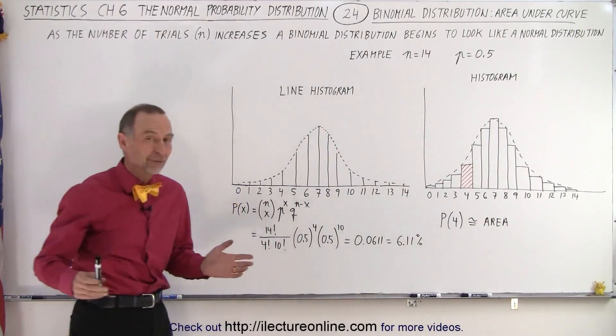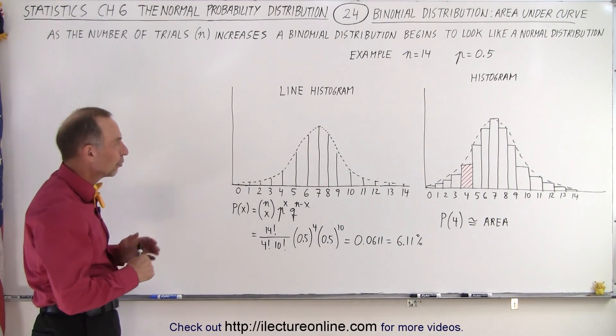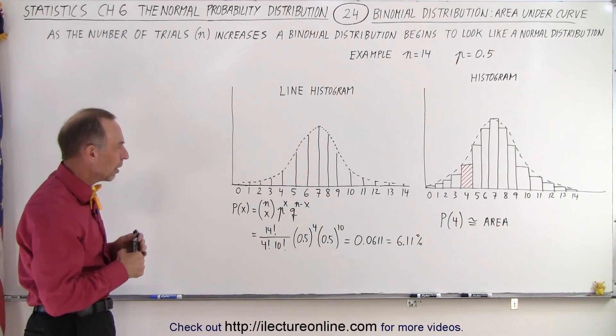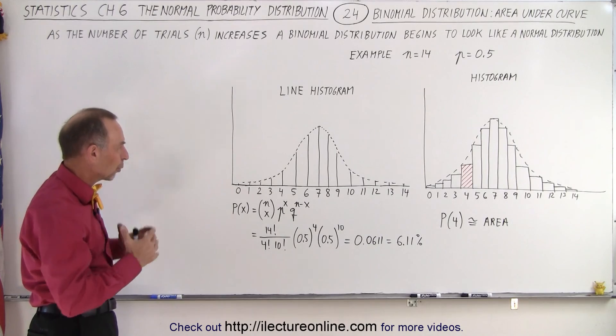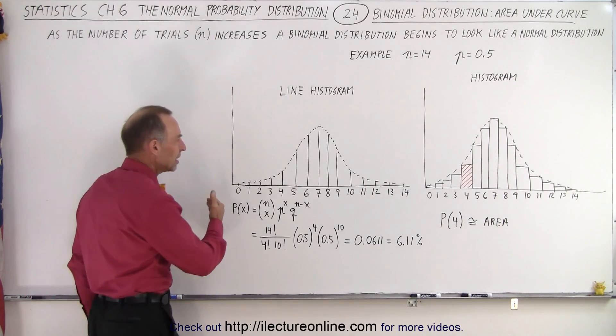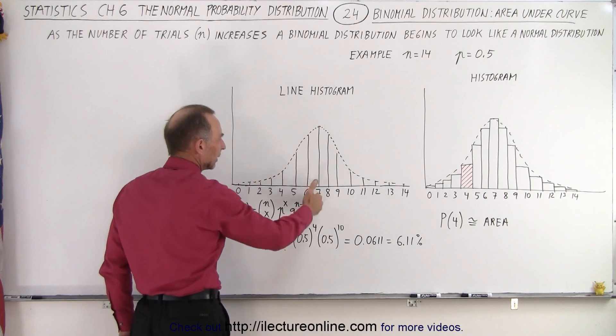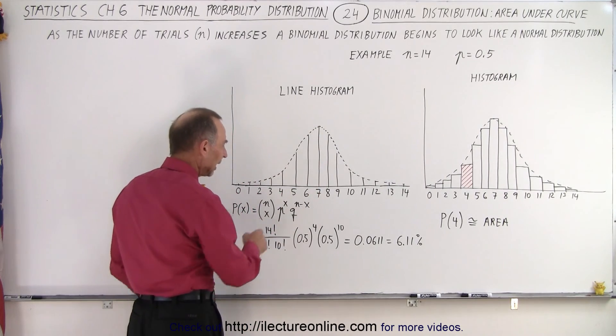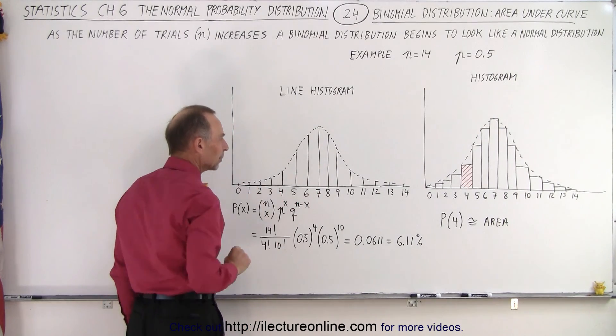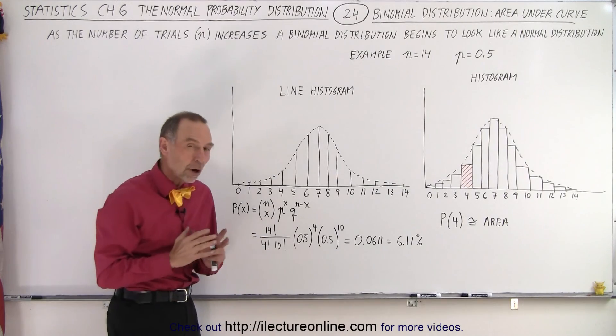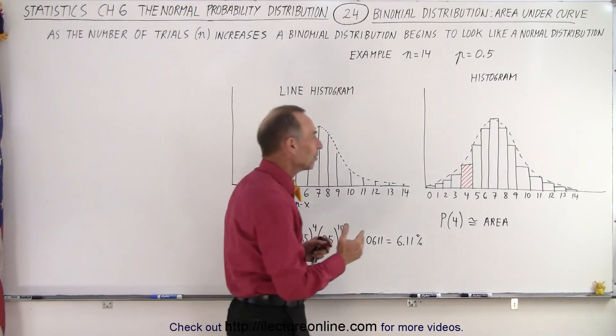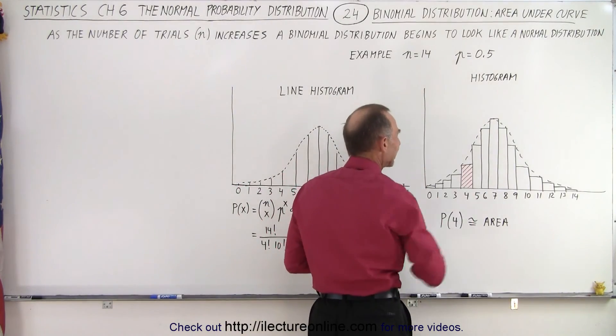We drew a line histogram of that particular situation, and notice that the highest probability occurs when the outcome is 7 and there's a lower probability when the outcome is 4. If we draw a histogram of that, notice we end up with these rectangles.